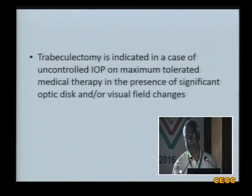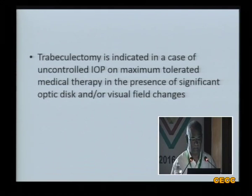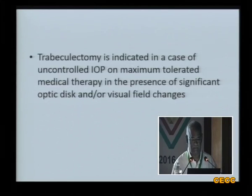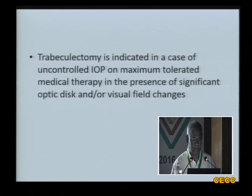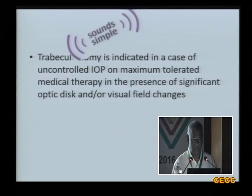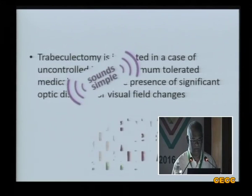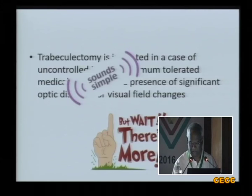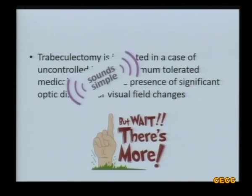Trabeculectomy is of course the gold standard surgical technique even now for glaucoma. It is indicated in case of uncontrolled intraocular pressure on maximum tolerated medical therapy in the presence of significant optic disc and visual field changes. This is very easy to say — it sounds very simple — but there is a lot more to this because there are many things we have to look into to decide about when to do surgery.